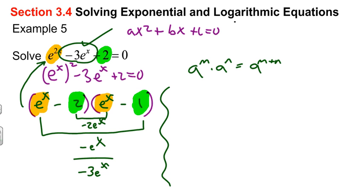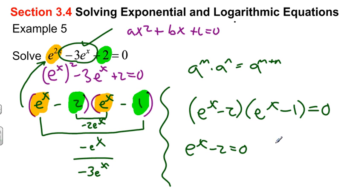So let me just write that a little nicer over here then. We have e to the x minus 2 times e to the x minus 1. And this is all equal to 0. And if you remember from algebra, if I have two factors multiplied and if they're equal to 0, then that means we set each factor equal to 0. So we'll set e to the x minus 2 equals 0, and then e to the x minus 1 equals 0.